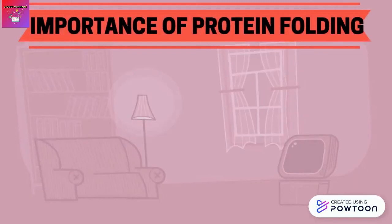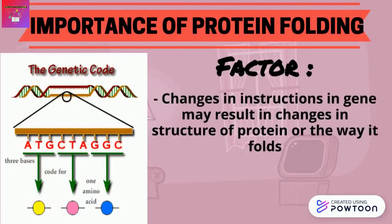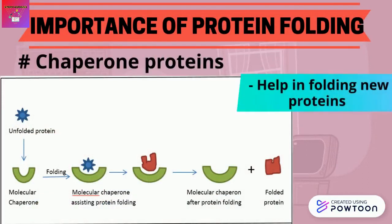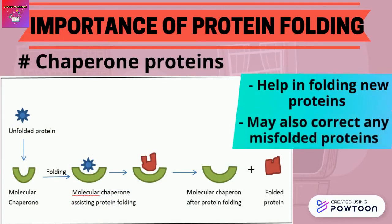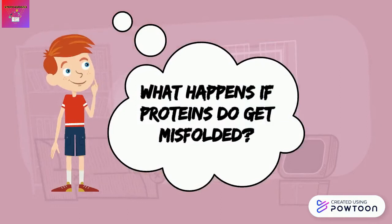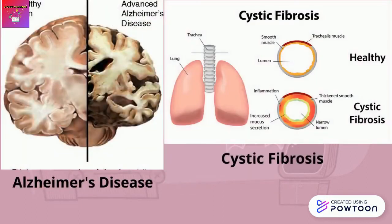As mentioned earlier, the function of a protein is directly associated with its three-dimensional structure. The main factor that controls protein folding is the instructions in our genes — changes in genes may result in changes in the structure of the protein or the way it folds. In our body, we have a type of protein called chaperone proteins that help fold new proteins and may also correct any misfolded proteins. Misfolded proteins can sometimes lead to diseases such as Alzheimer's disease or cystic fibrosis.